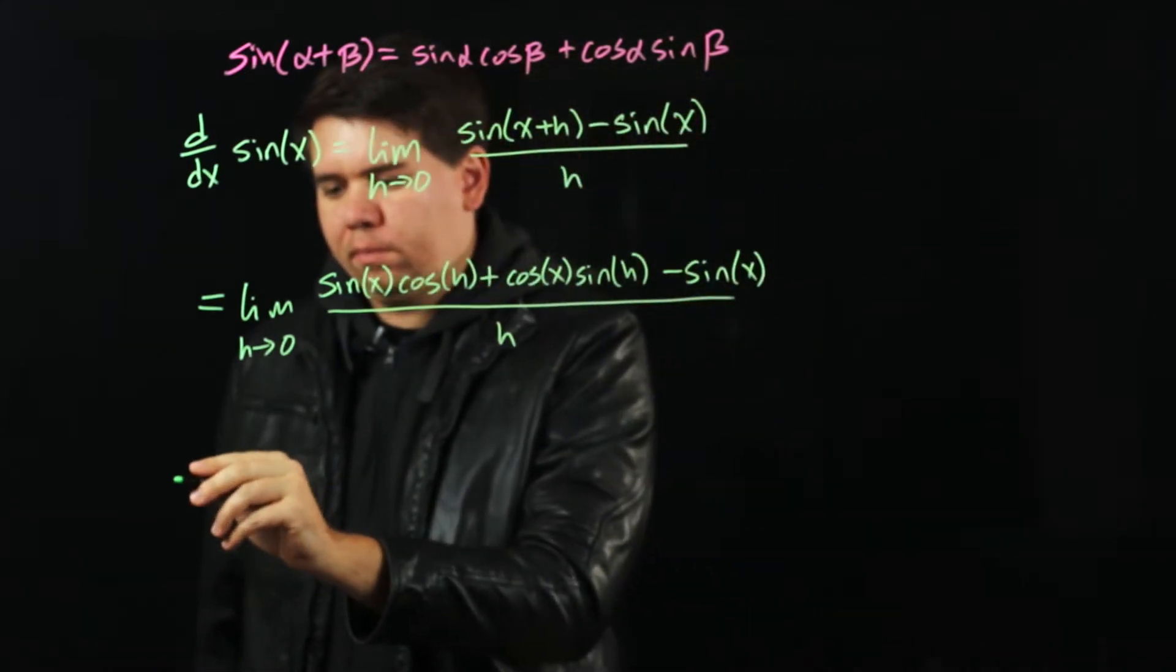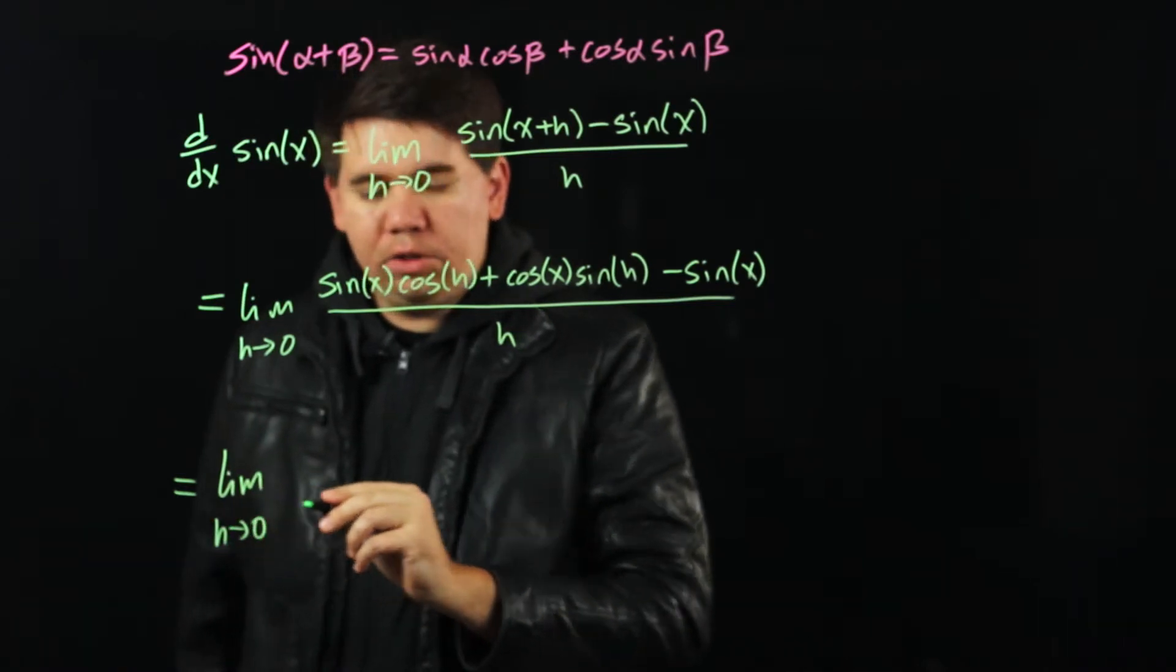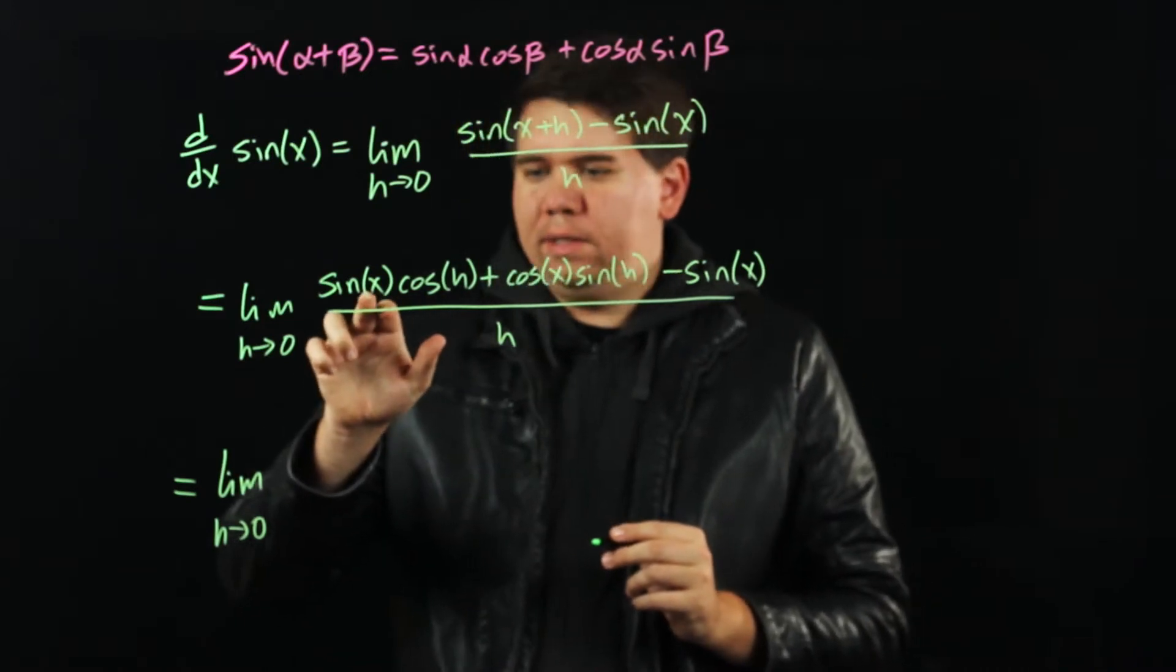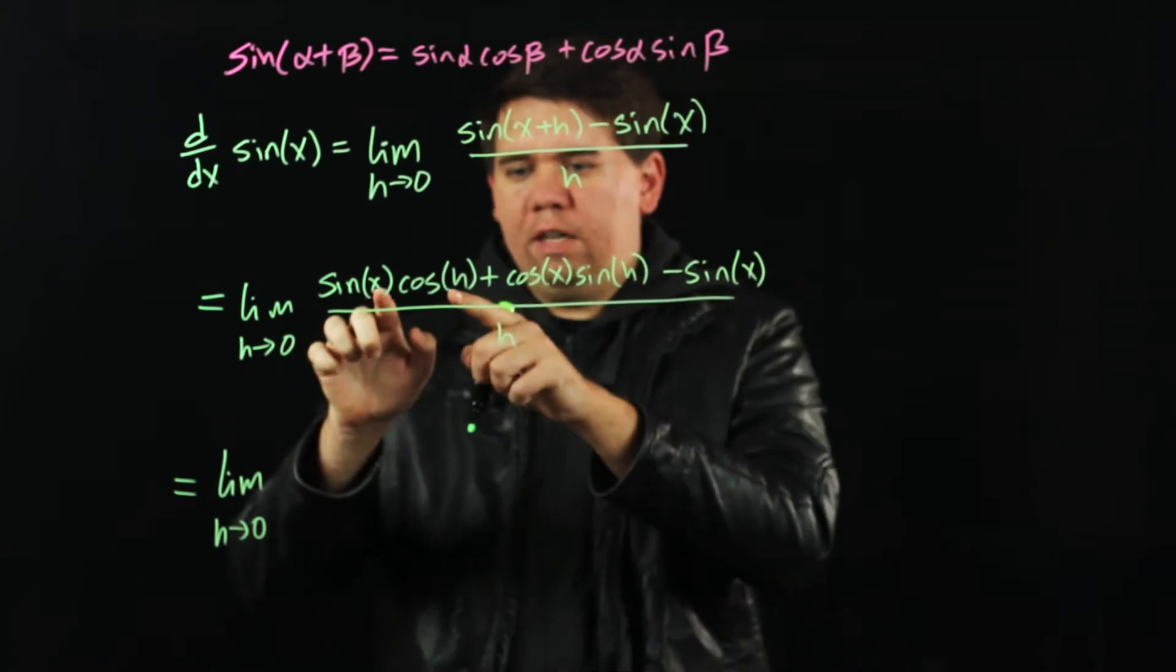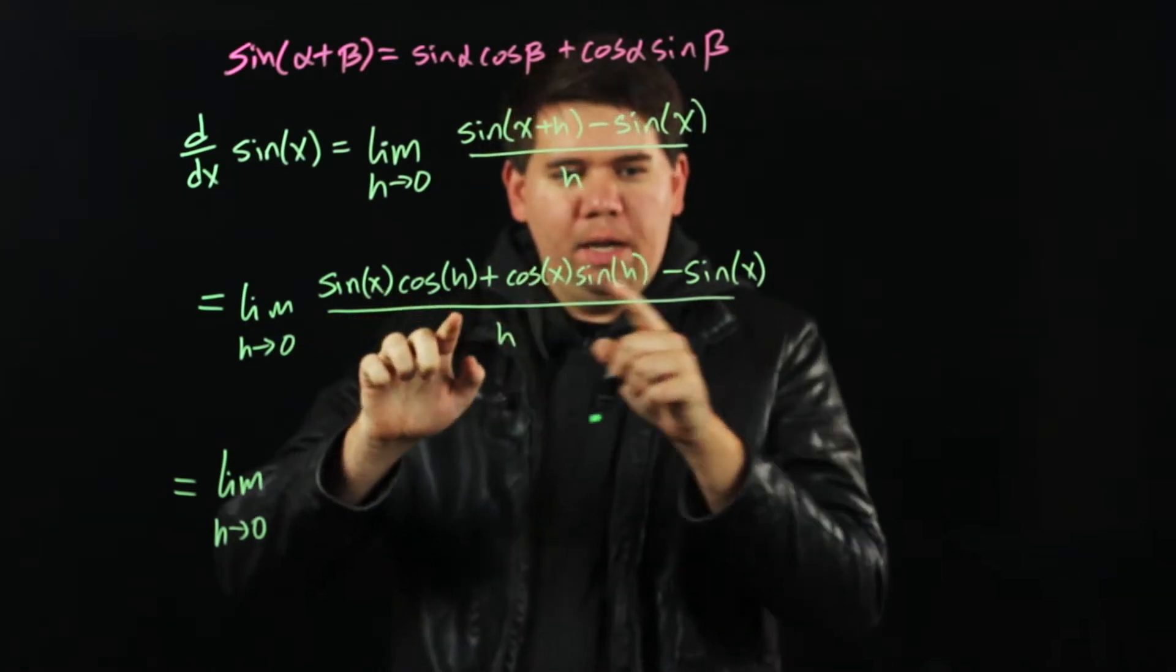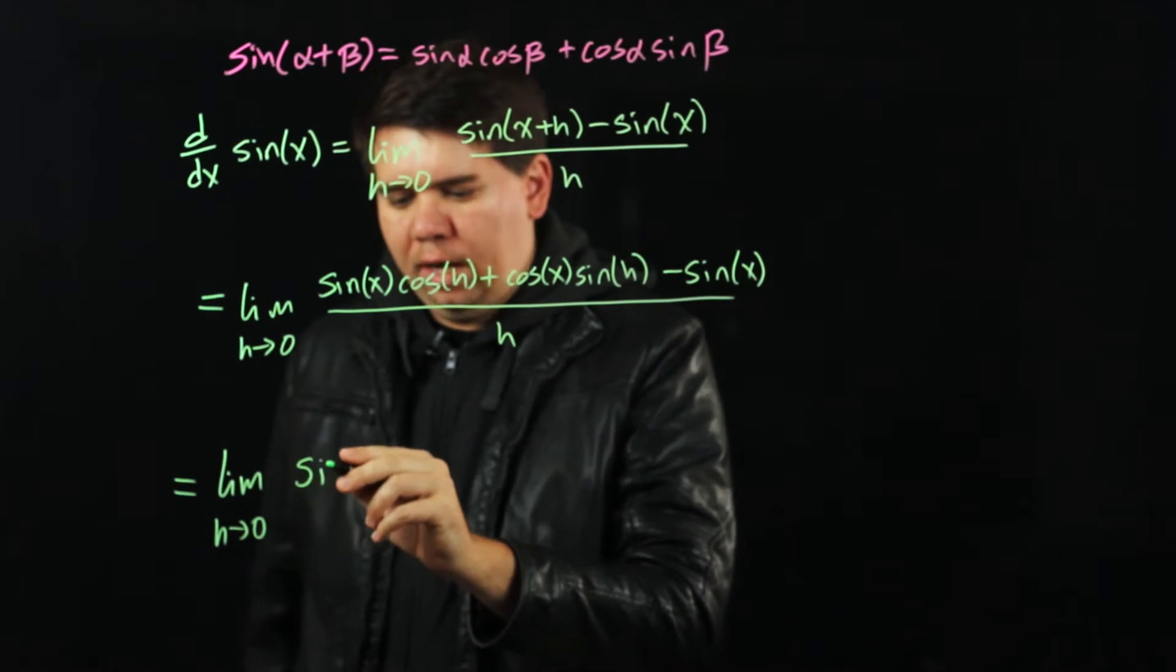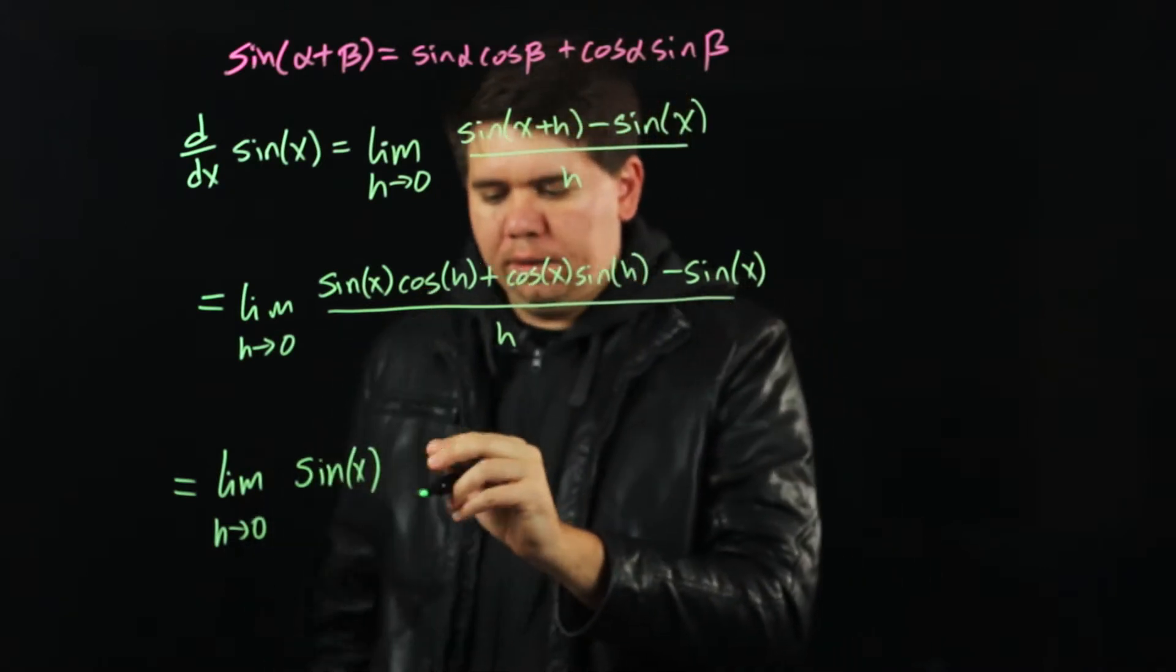Rearranging some terms, we see we have the limit as h goes to 0. Here we have a sine of x and this one also has a sine of x term. So we can think of putting those next to each other and pulling out that sine of x. You're left with cosine of h minus 1, divided by our h.